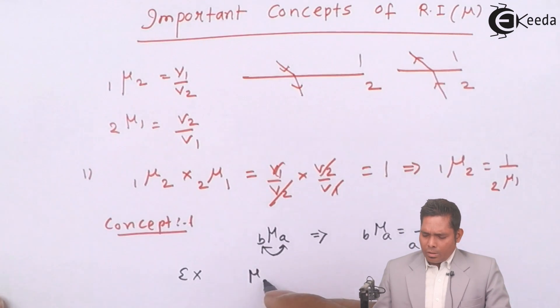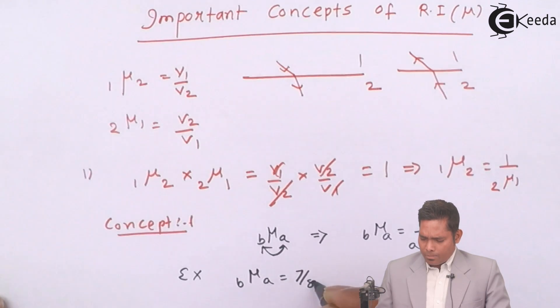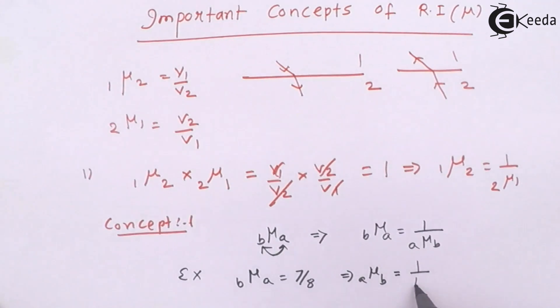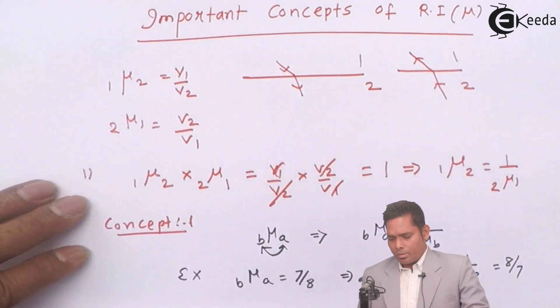For example, refractive index of medium A with respect to B is given as 7 by 8, then what is the refractive index of B with respect to A? The refractive index of B with respect to A can be written as reciprocal of refractive index of A with respect to B. From this concept, this is given to us, so 1 divided by 7 by 8, so answer is 8 by 7.